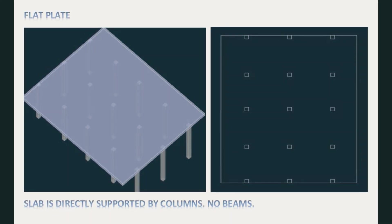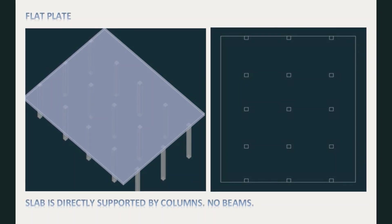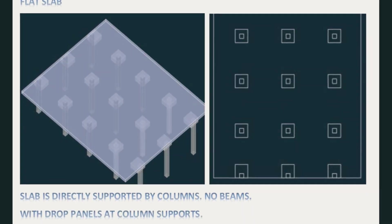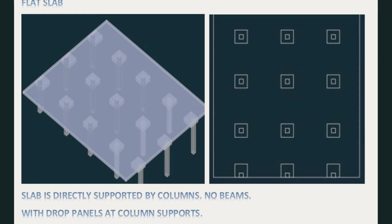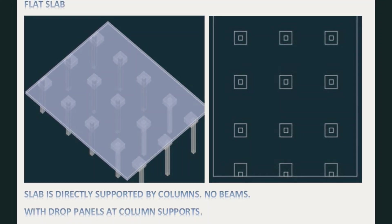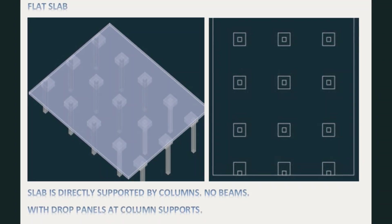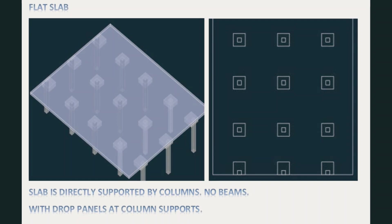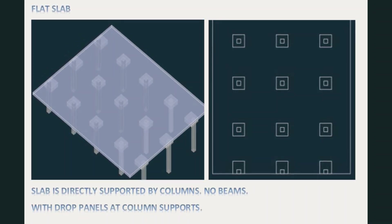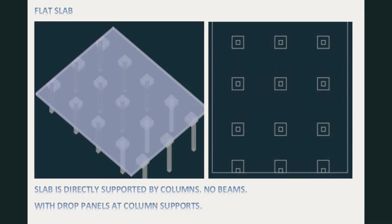However, a flat plate has limitations. It is only feasible if the slab span is not too long and the loadings are not too heavy. That brings us to the fourth type of slab: a flat slab. A flat slab also has no beams and transfers loads directly to the nearby columns, except there will be drop panels at the column areas. The introduction of drop panels takes care of the punching shear and the bending moments around the column supports.